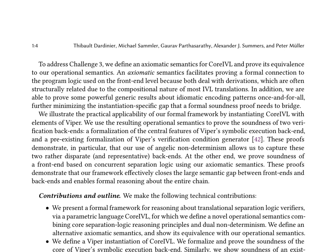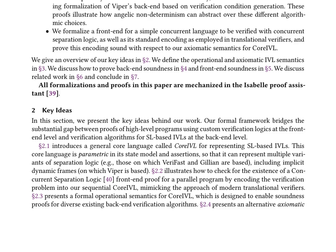It also presents a formal operational semantics for core IVL, designed to enable soundness proofs for diverse existing back-end verification algorithms. Furthermore, the authors define an alternative axiomatic semantics for core IVL and prove its equivalence with the operational semantics. They showcase the practical applicability of their formal framework by instantiating core IVL with elements of Viper and proving the soundness of two verification back-ends: a formalization of the central features of Viper's symbolic execution back-end and a pre-existing formalization of Viper's verification condition generator. The paper concludes by discussing related work and outlining future research directions, with all formalizations and proofs mechanized in the Isabelle Proof Assistant.